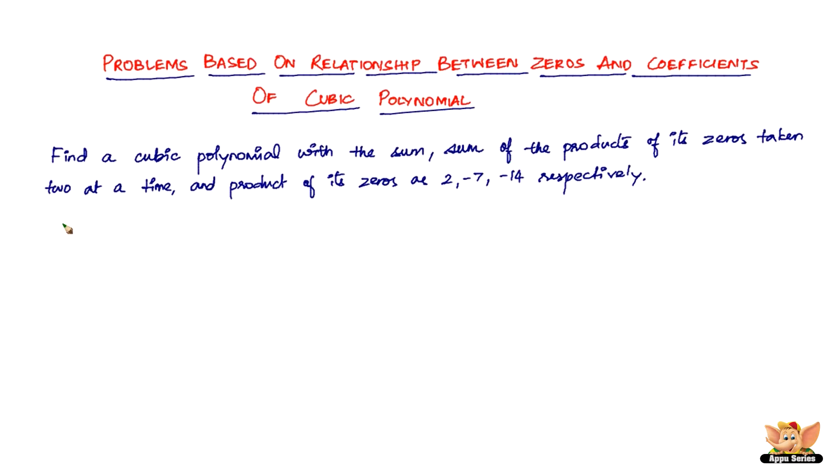This translates to: α + β + γ = 2, αβ + βγ + γα = -7, and αβγ = -14.